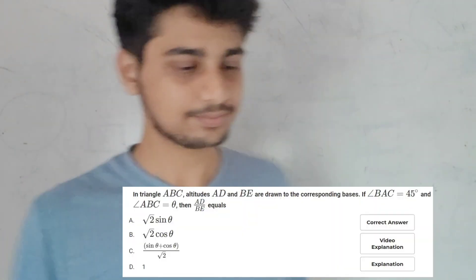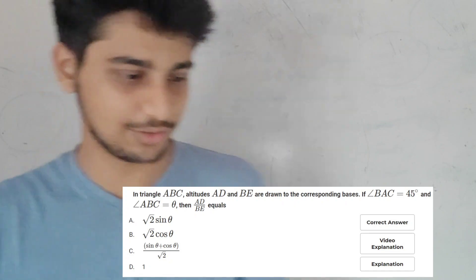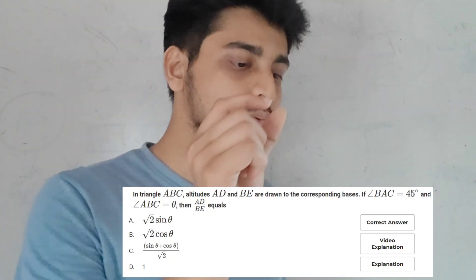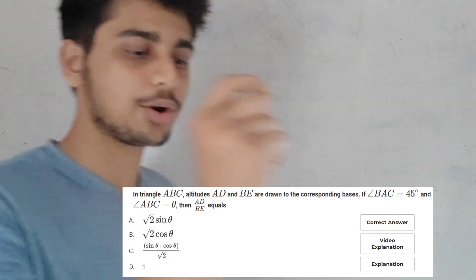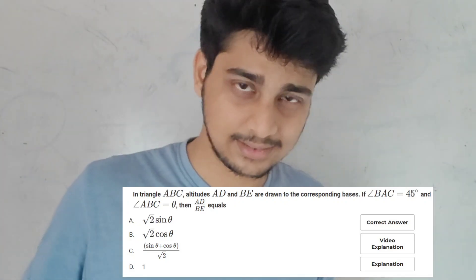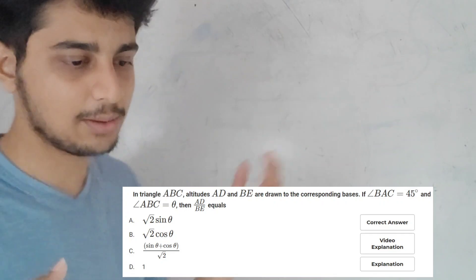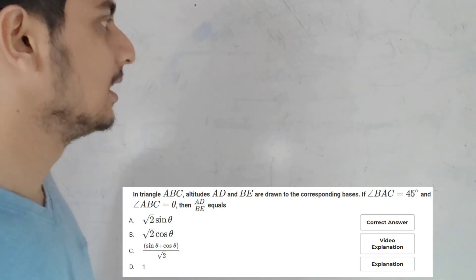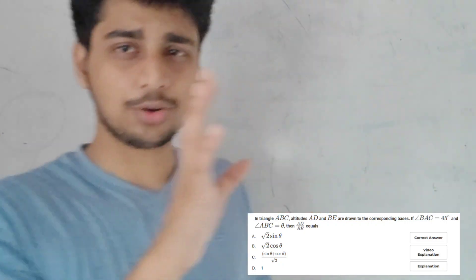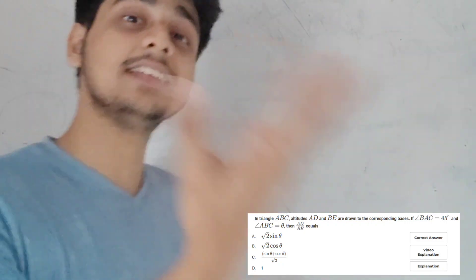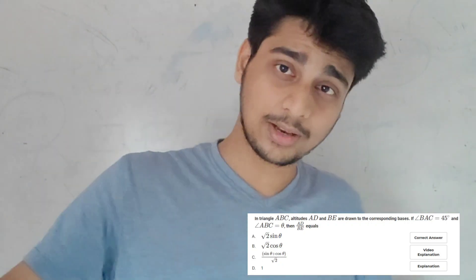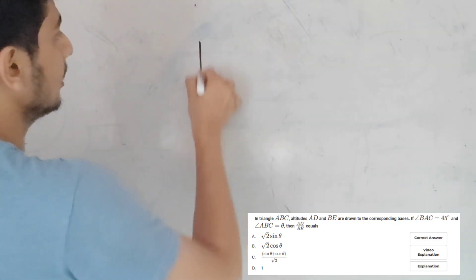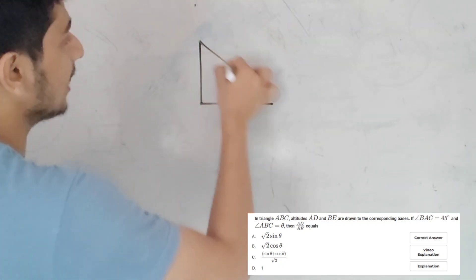So, another question is on the screen. Let's start. In triangle ABC, altitudes AD and BE are drawn to the corresponding bases. If angle BAC is equal to angle ABC, then AD is equal to what? They are going to ask about a triangle.